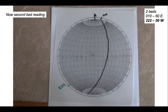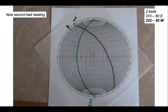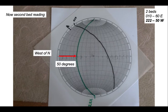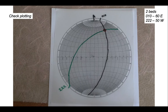Now let's get back to north and put on the second bed reading. This has a strike of 222 and its dip is from the west. We swing the stereonet around to find 222, line it up with the great circles, and trace off the one representing 50 degrees measured in from the western side. Now we've got our two bedding planes — one from each limb — arcing across the stereonet, and their intersection is going to be the hinge line.